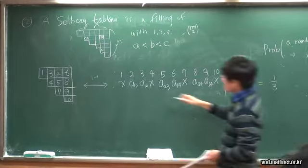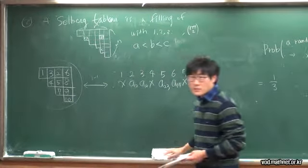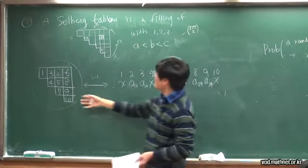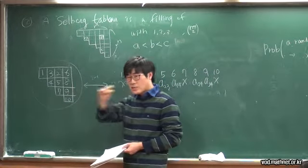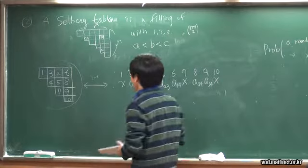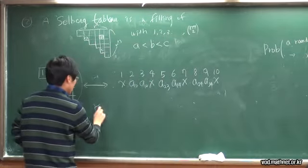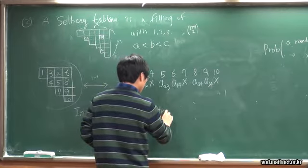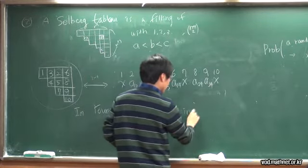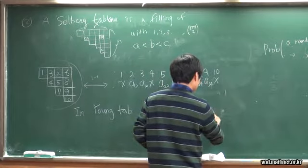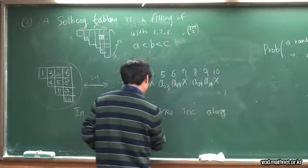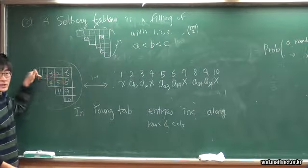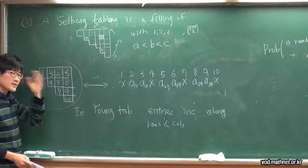In fact, Selberg tableau are very similar to the well-known Young tableau. A Young tableau is a special Selberg tableau in which the entries are increasing in each row and each column. So Young tableau form a subset of Selberg tableau — if entries are increasing in every row and every column, it's a Young tableau.